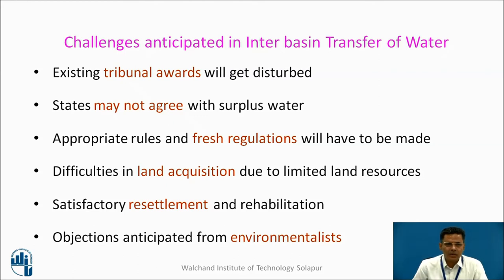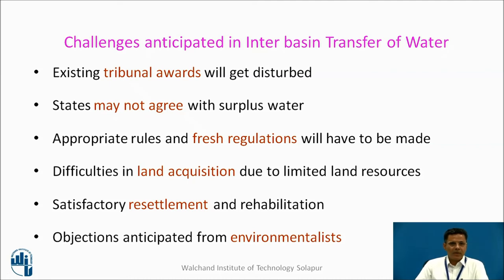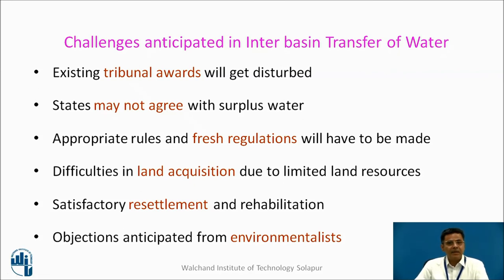Challenges anticipated in interbasin transfer of water: first, existing tribunal awards of different rivers such as the Krishna Tribunal Award and Kaveri Tribunal Award will get disturbed. States may not agree on surplus water, and decisions regarding water resources are taken jointly by central and state governments, as water resources is a subject in both the state list and the central list. Appropriate rules and fresh regulations will have to be made. Difficulties in land acquisition, satisfactory resettlement and rehabilitation of displaced people, and objections from environmentalists are also anticipated challenges.